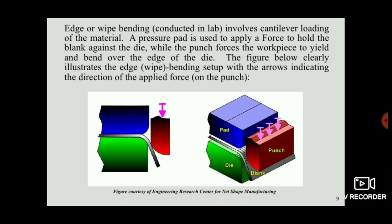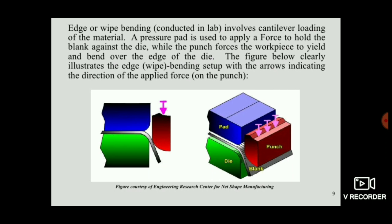Based on the clearance, we can get the required angle. This is a short overview of the edge or wipe bending process, which is a sheet metal manufacturing process.